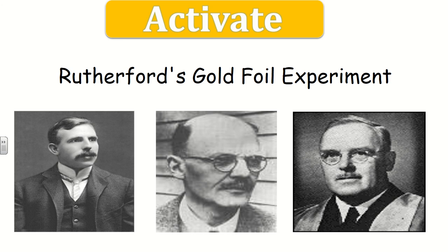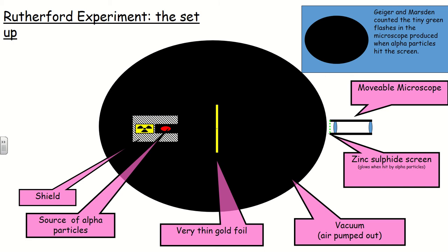Once Thomson revealed that something exists inside an atom, people wanted to find out more. The biggest step came from an experiment performed by three individuals: Rutherford on the left, Geiger in the middle, and Marsden on the right. Rutherford was in charge; Geiger and Marsden were his students at the time. They both went on to become Nobel Prize-winning physicists. Rutherford designed the experiment to test Thomson's plum pudding model.